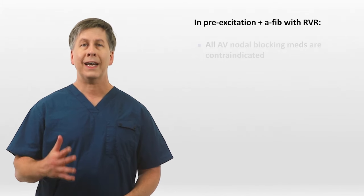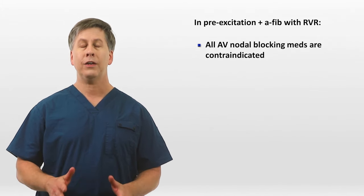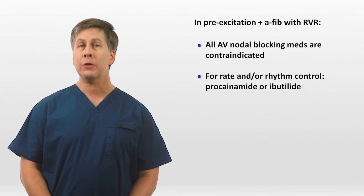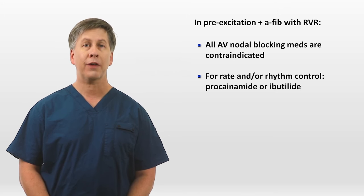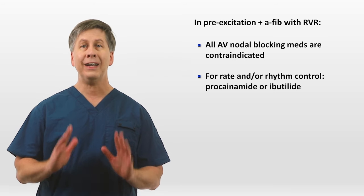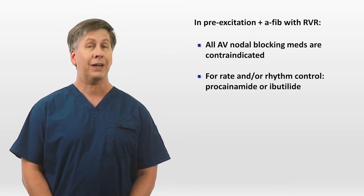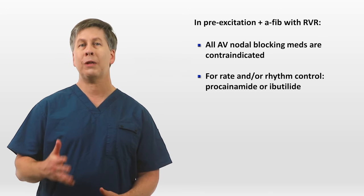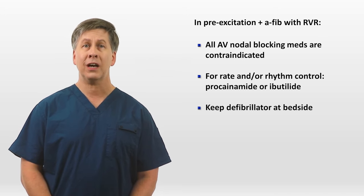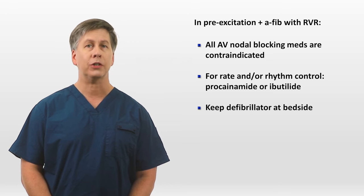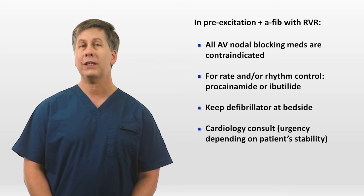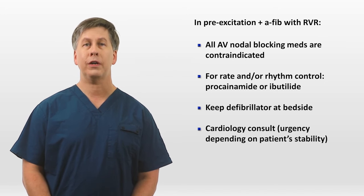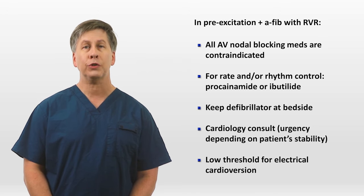So what do we do? All AV nodal blocking meds are contraindicated acutely. For rate and/or rhythm control, the meds of choice are procainamide or ibutilide, which slow conduction down the accessory pathway. Because of the potential that these patients can develop V-fib even spontaneously — or be shocked due to the extremely fast rates — keep the defibrillator at the bedside until some degree of rate control has been established. These patients all warrant a cardiology consult, with the urgency depending on the patient's stability as judged by ventricular rate, blood pressure, symptoms, and comorbidities. You should have a low threshold for electrical cardioversion.